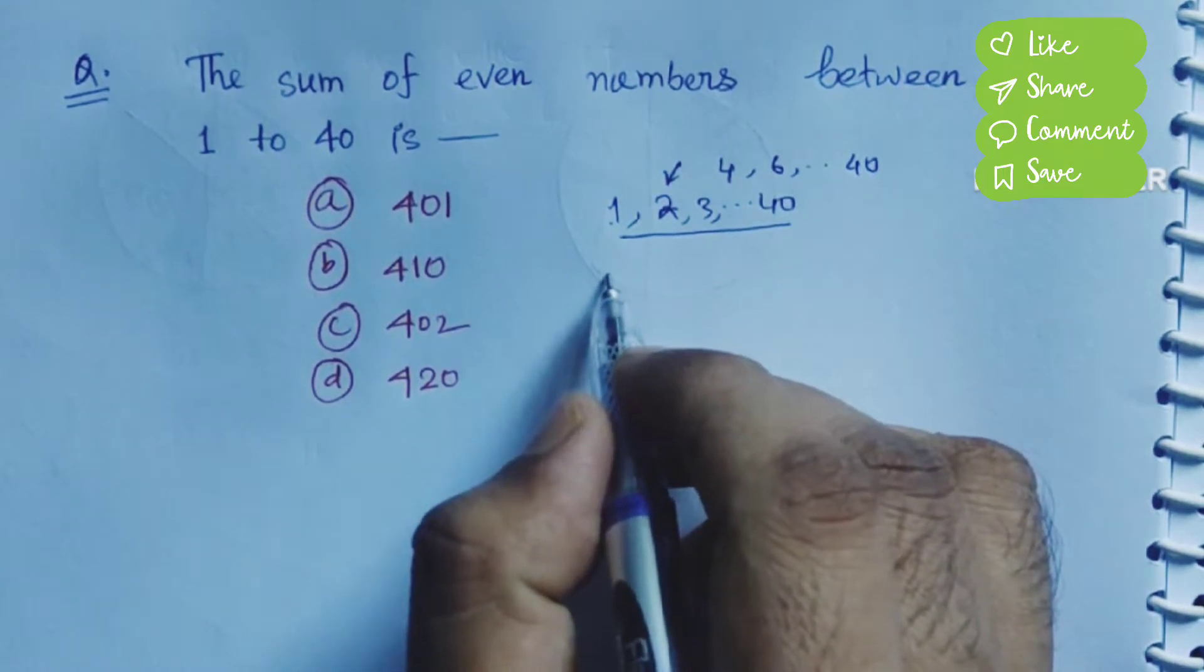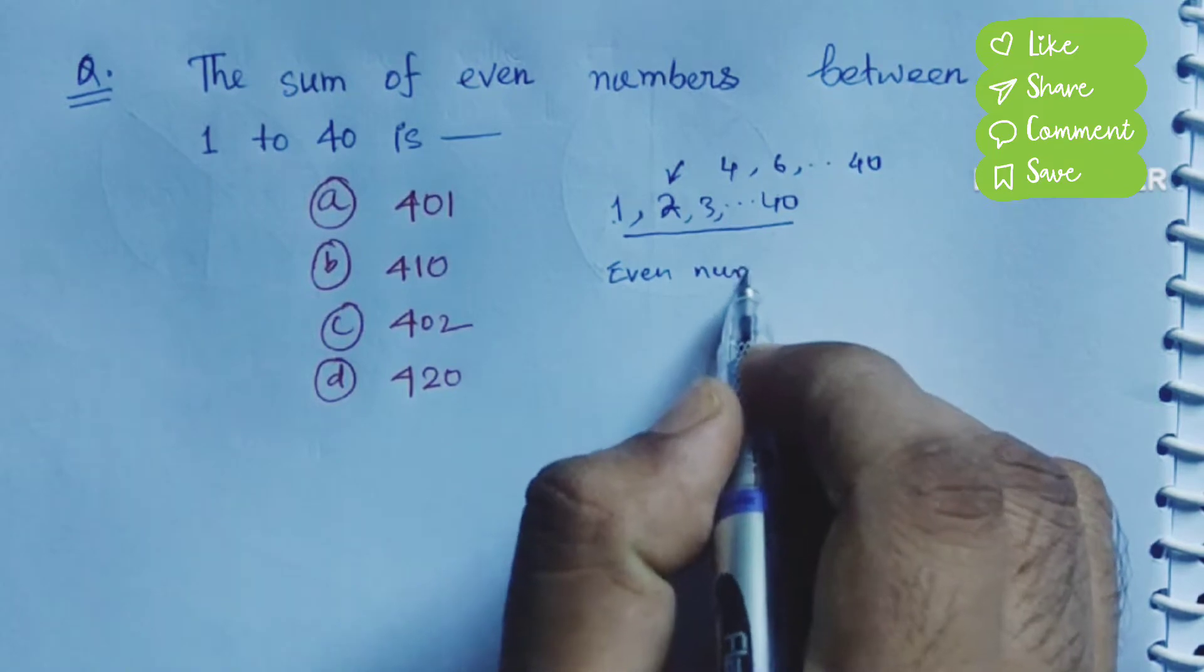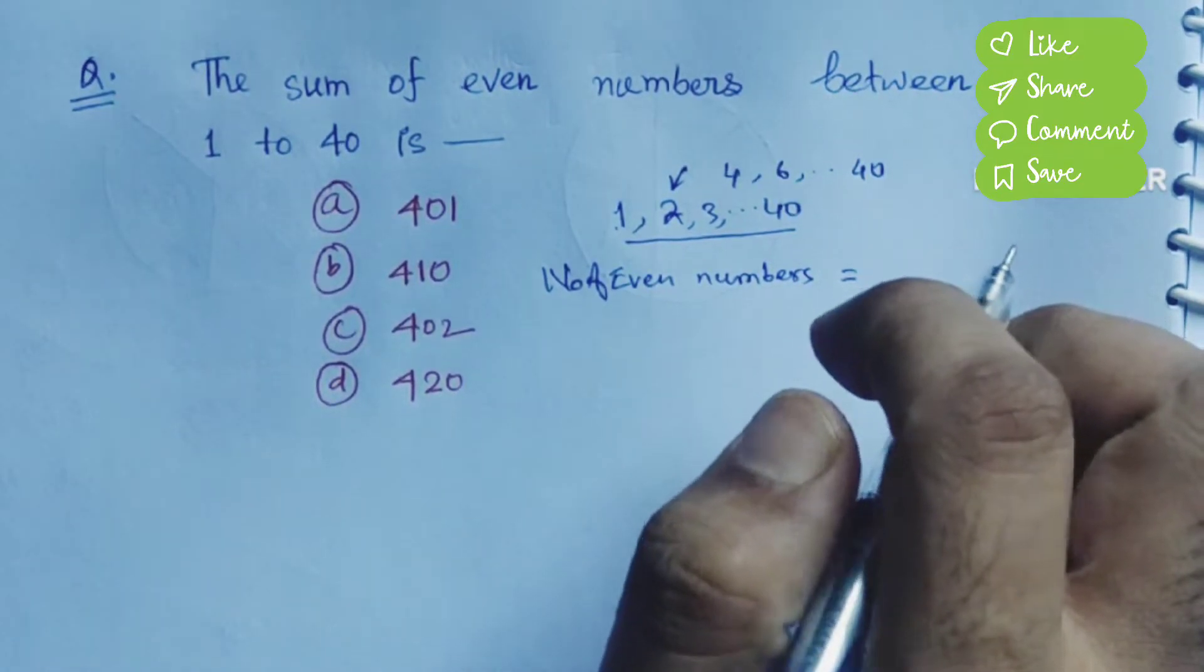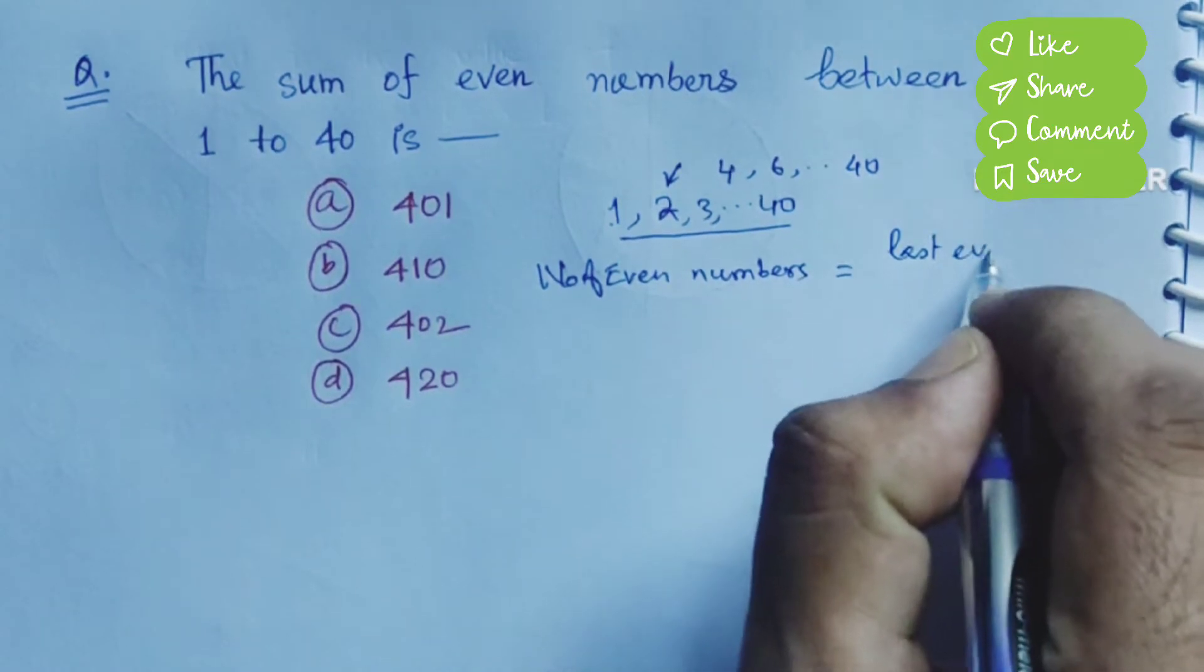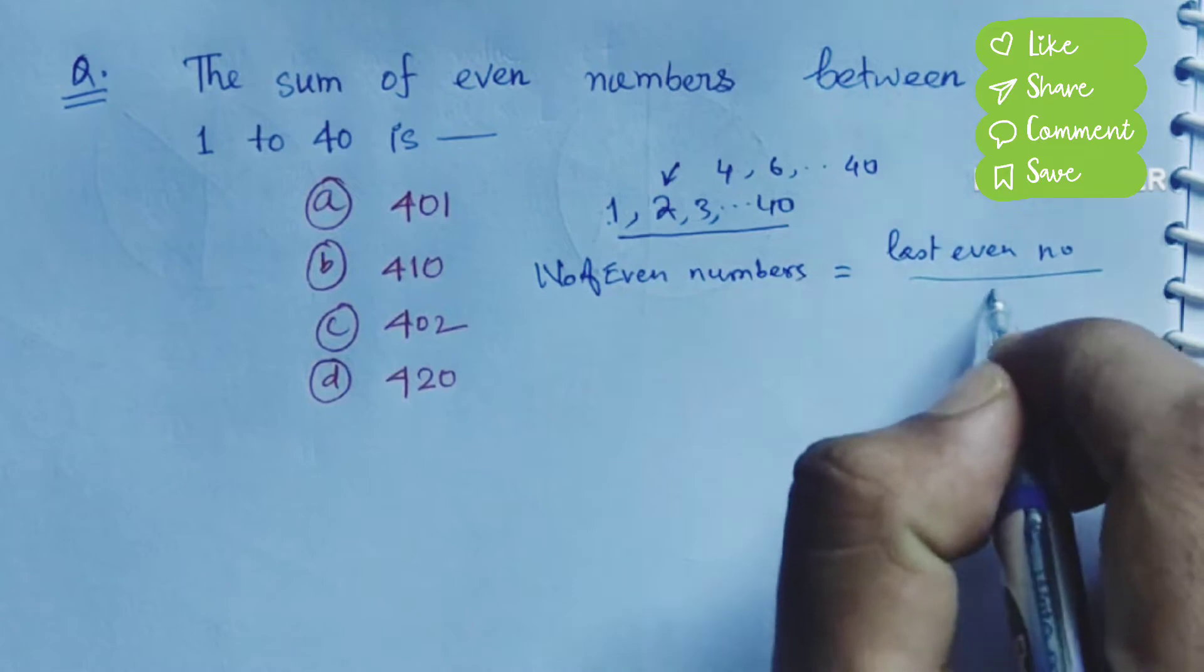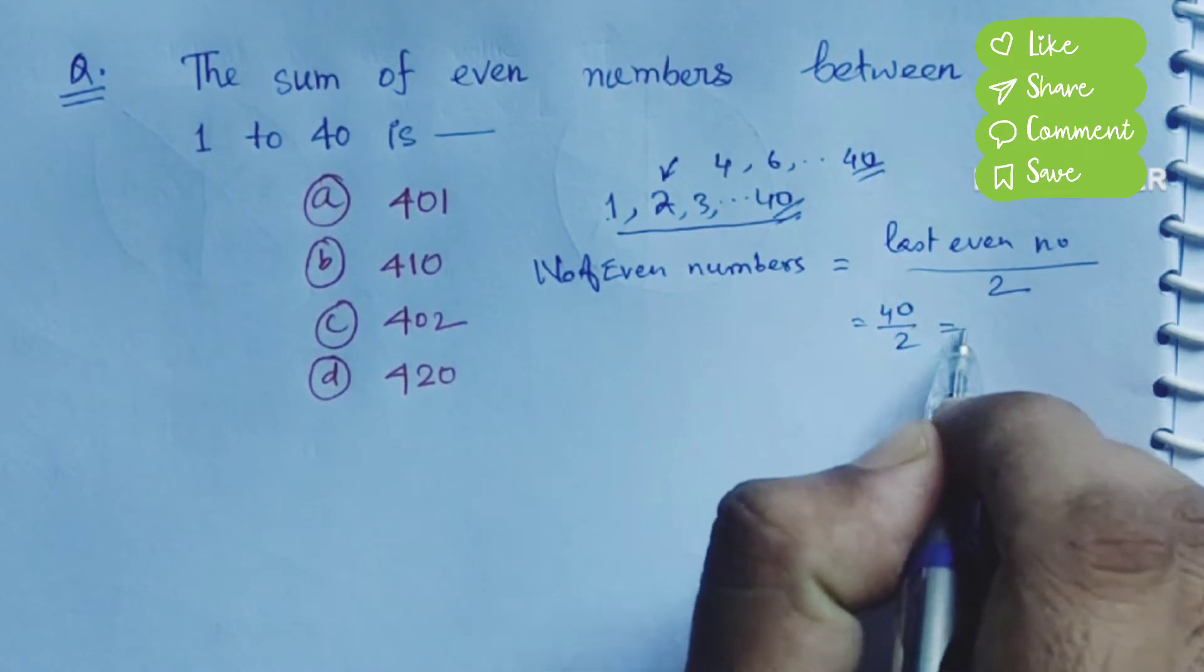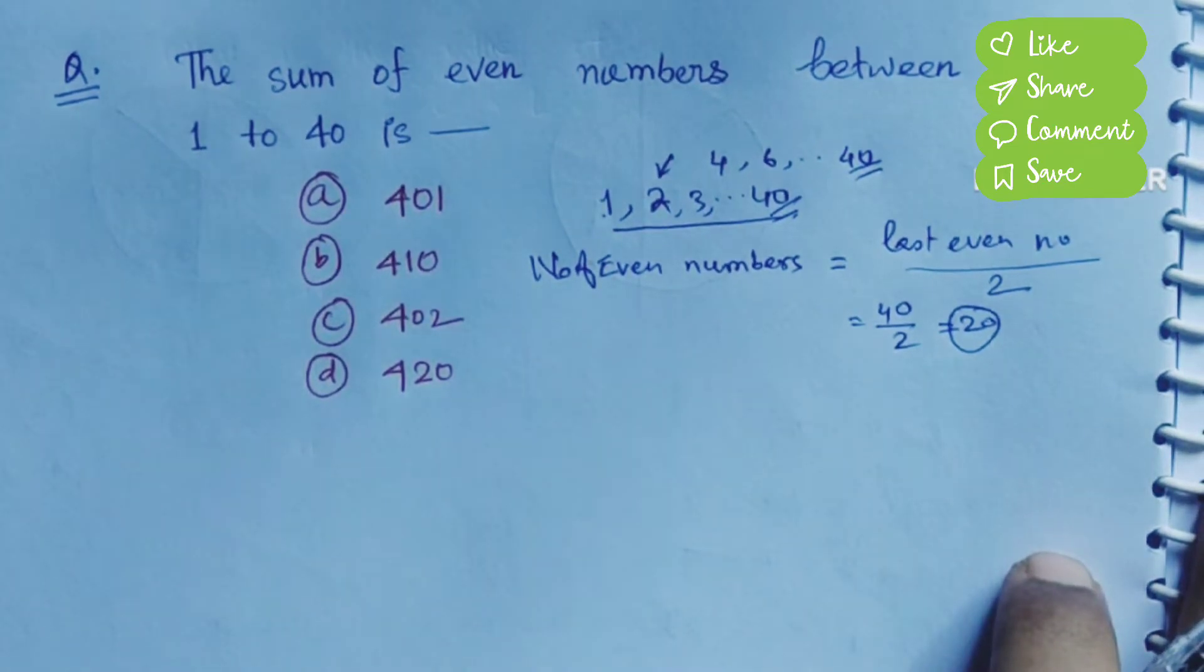Given our learning formula, I'll say total number of even numbers is equal to... the formula says it was last even number divided by 2. So here last even number is 40, so 40 divided by 2, that means 20. So total number of even numbers between 1 to 40 is 20.